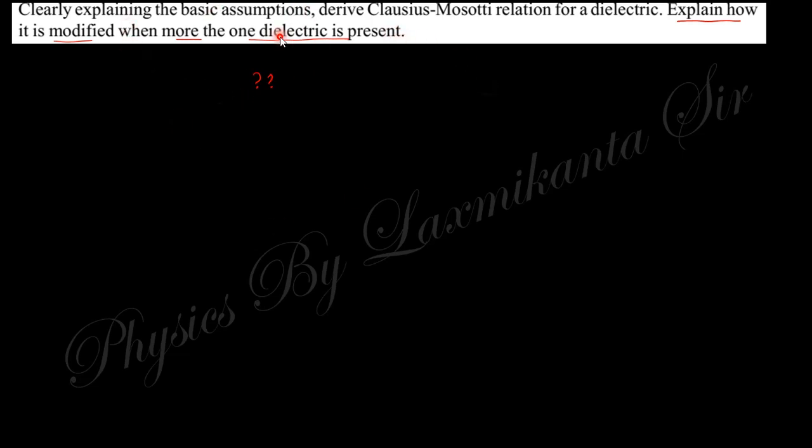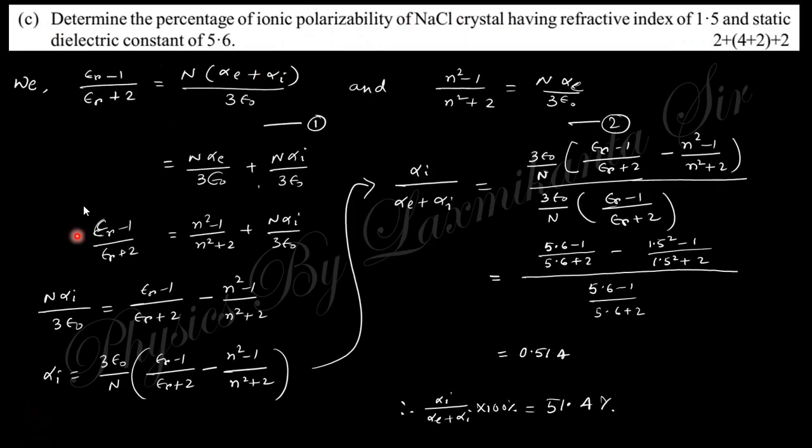The additional question: Explain how it's modified when more than one dielectric is present. I cannot find out the solution of this question. Next question says: Determine the percentage of the ionic polarizability of NaCl crystal having the refractive index. Previously, we obtained these two relations: one for electronic and ionic, and this is for electronic only. So if you compare and divide, you'll get this expression, and putting this value you'll obtain 51.4 percent.